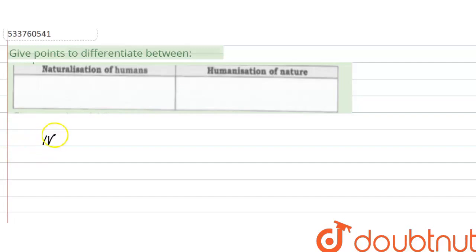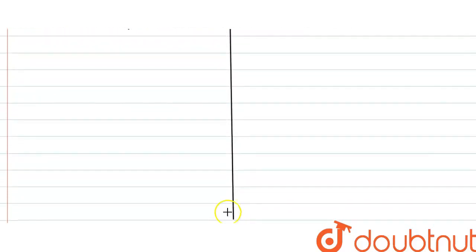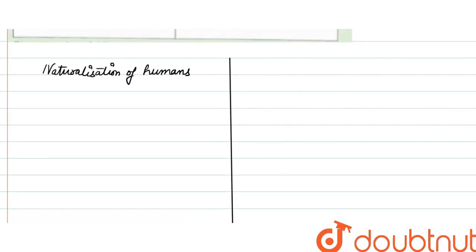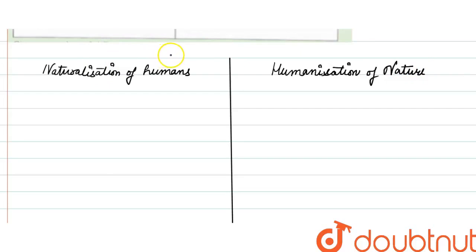So, naturalization of humans — in primitive societies, people used to worship nature. Humans were worshipped by nature. In primitive societies, people used to worship nature. But in today's time, people don't follow nature.